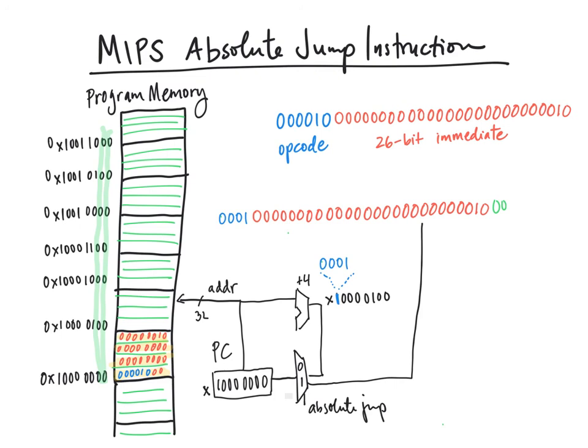For example, you could use the jump register instruction. You would place the entire 32-bit address that you'd like to jump to in a register, and then you use the jump register instruction instead of the absolute jump instruction.